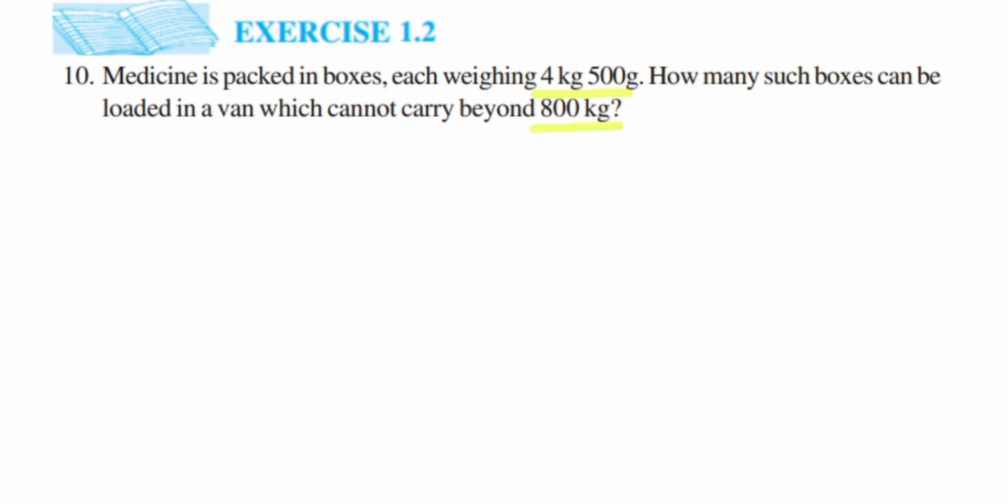If you see here, you have grams and you have kg, so before we solve this we have to make sure that they are all in the same unit. We're going to convert kg into grams. We can convert grams into kg, but the answer will come in decimals, so to avoid that we're going to convert kg into grams. Now, it should not be more than 800 kg, right? So we have to see how many 4 kg 500 grams can come in this 800, so we have to divide it.